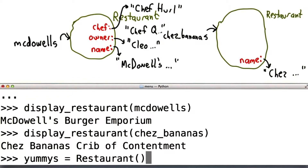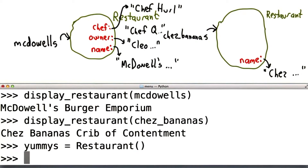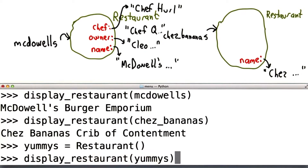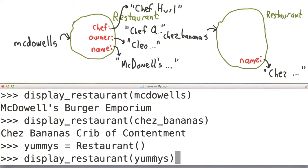Let's create one new restaurant and we'll assign this to the name Yummies. Now we have a quiz. What do you think display restaurant Yummies will do?